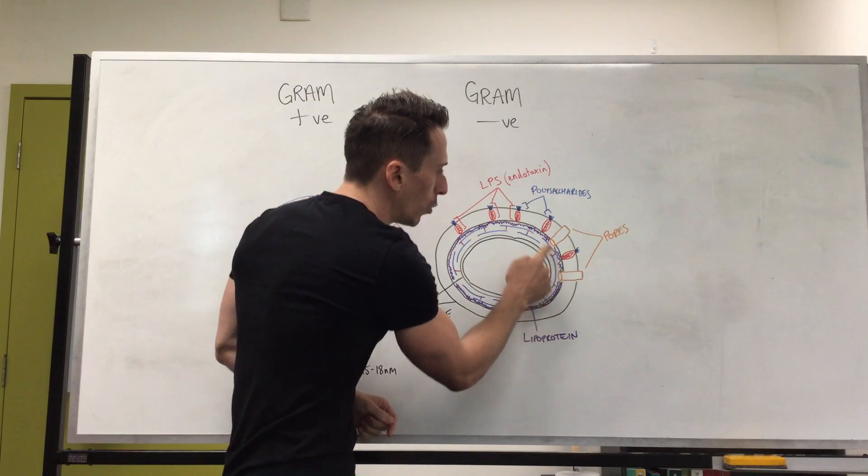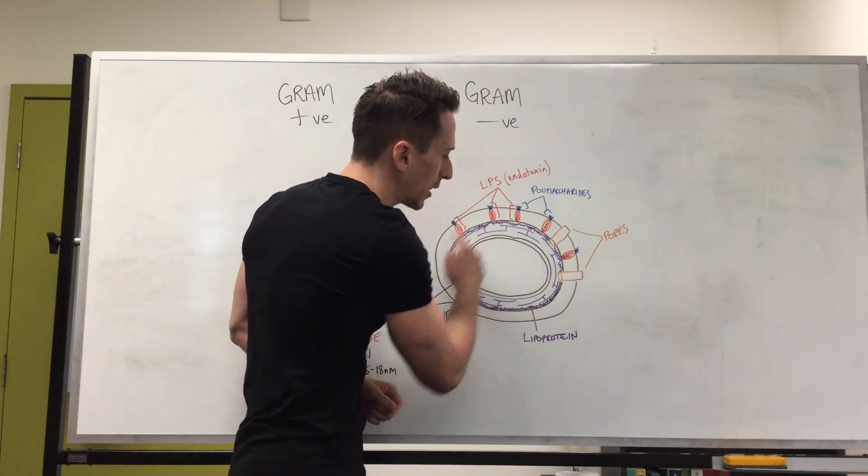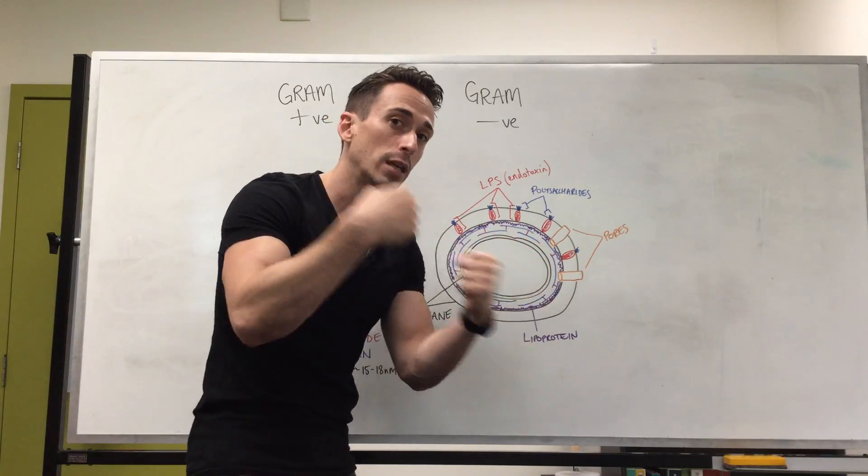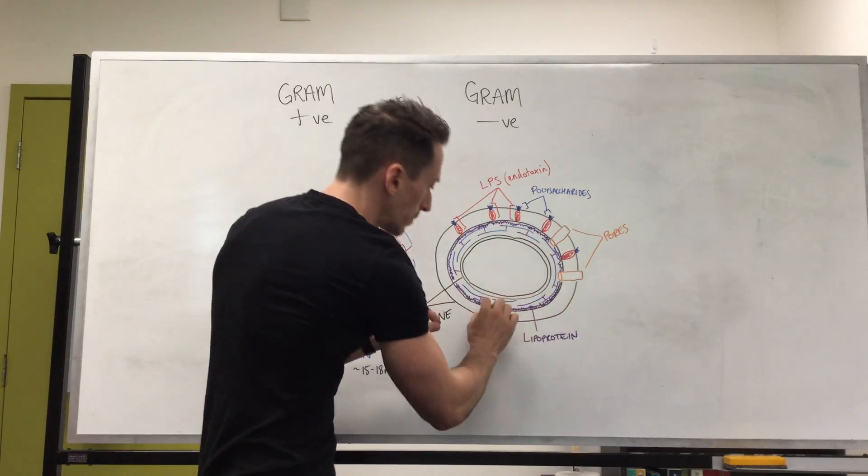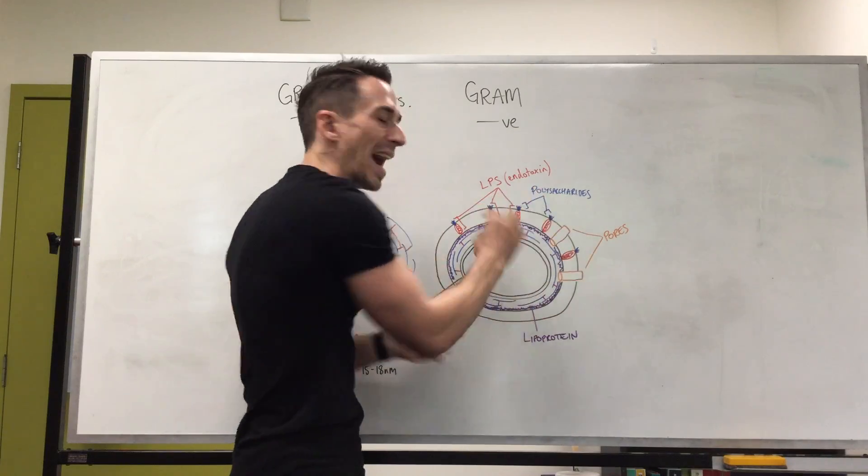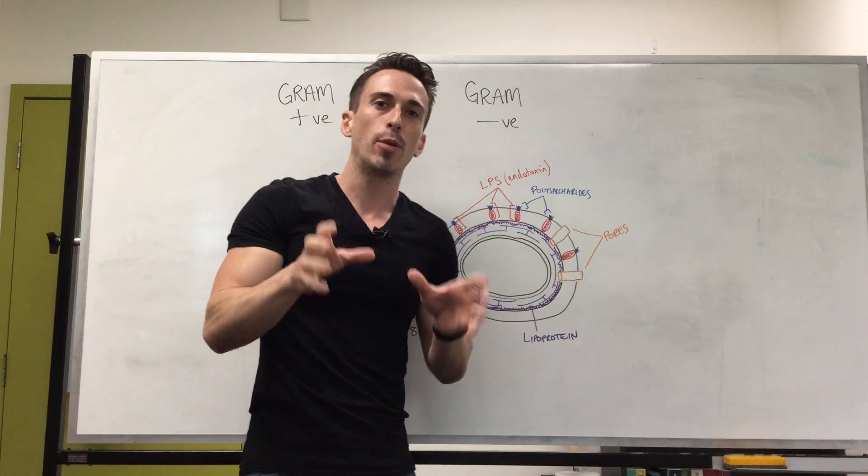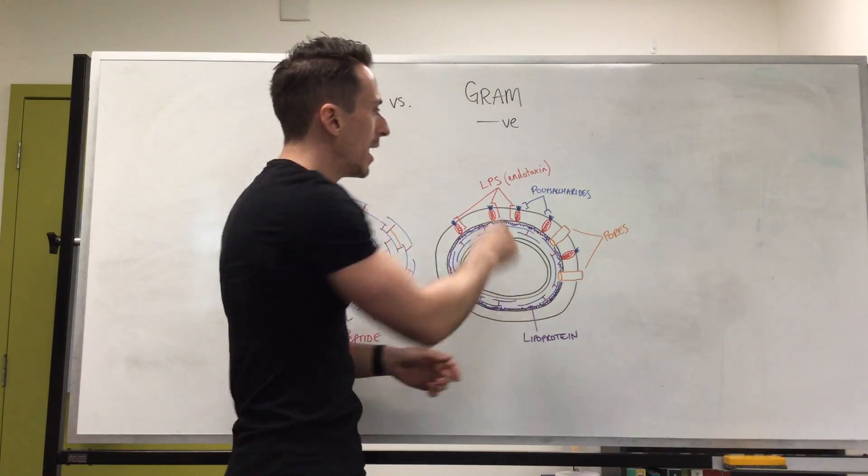Between the cell wall, the thin cell wall and the phospholipid bilayer, there's another layer called lipoprotein, so that's fats and proteins clicked together. And then the phospholipid bilayer on the outside has embedded in it these things called lipopolysaccharides, LPS.